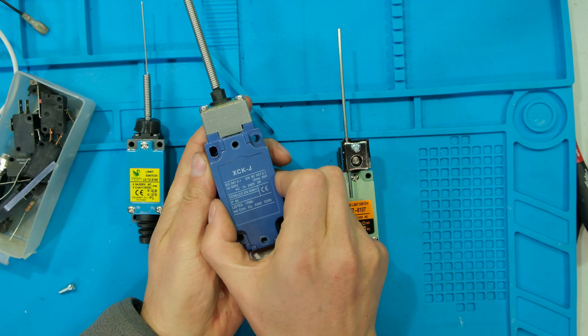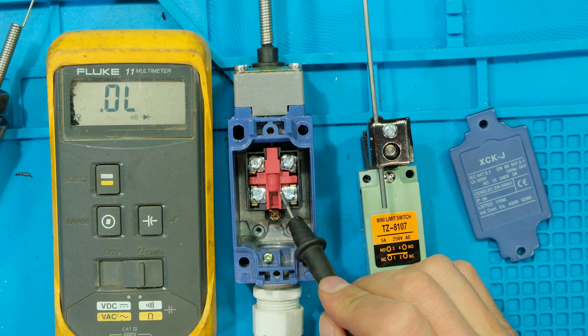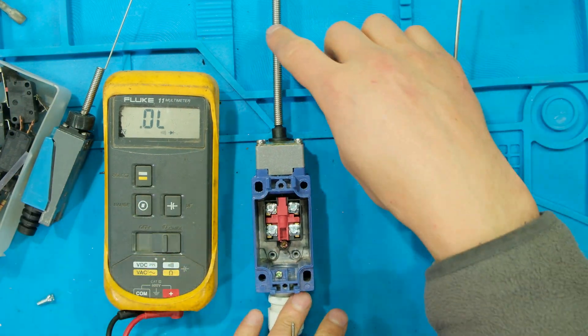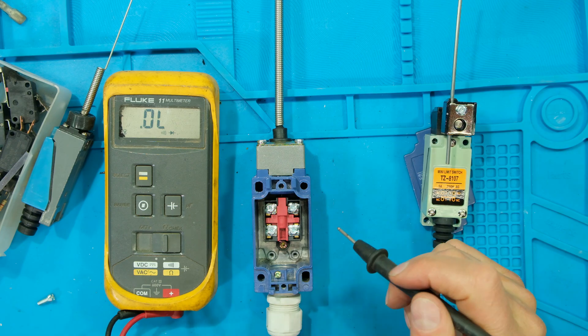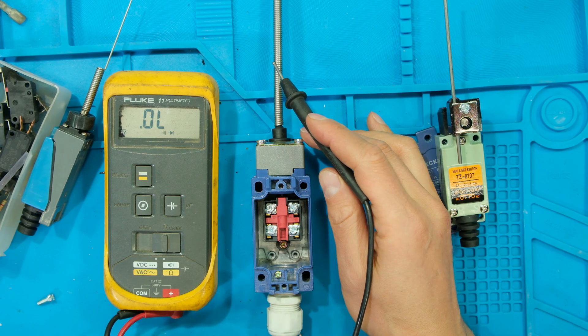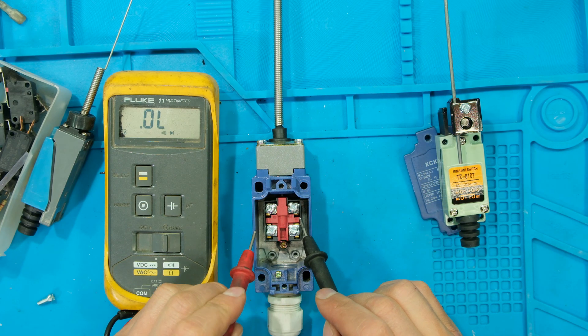Inside the limit switch, if I open the cover you'll see connectors. Inside it says NO and NC - normally open, normally closed. I have to decide if I want it normally open or normally closed. When it's at rest the gate is open, so it should be an open circuit. That's why I'm using the NO which stands for normally open.